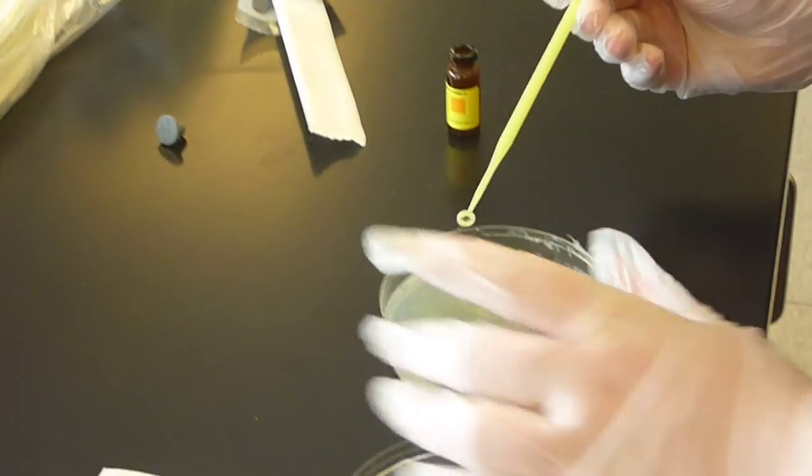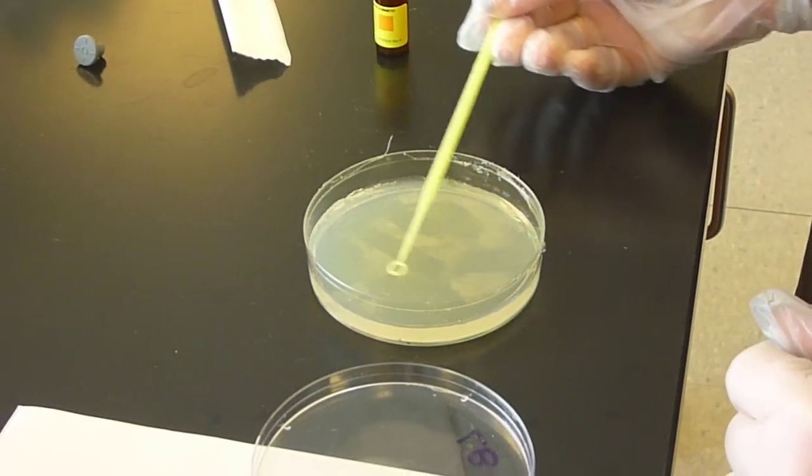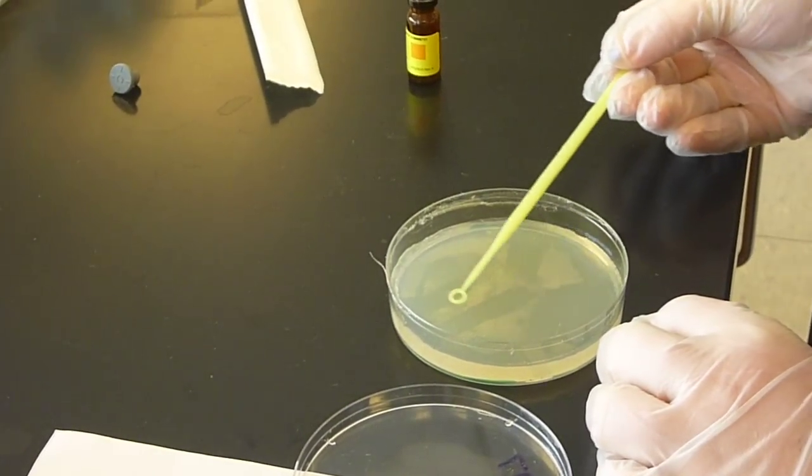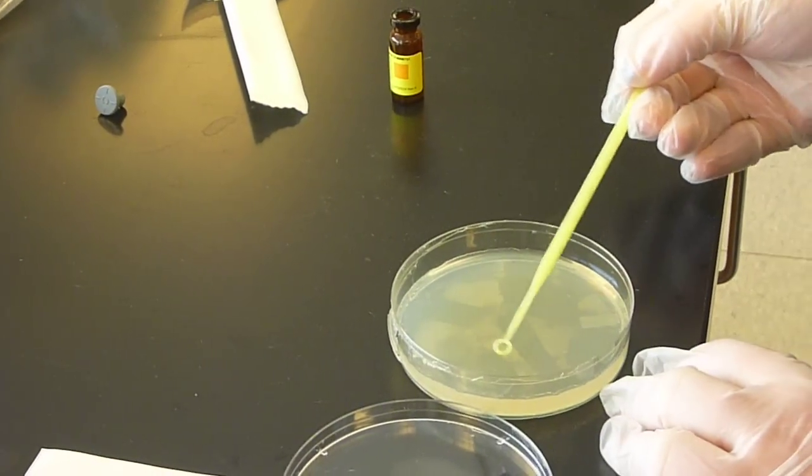She opens up the dish, and so she's going to employ the same streaking technique that you saw earlier on the paper. Notice that nice 45 degree rotation. So she's got one more, and then she rotates it one more time.